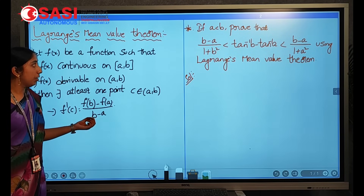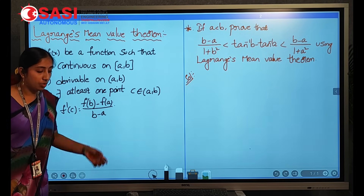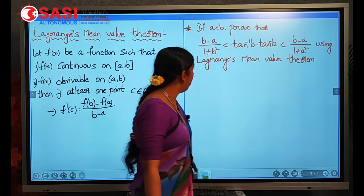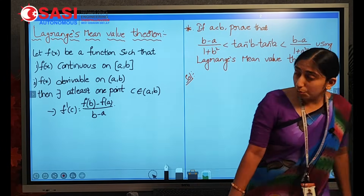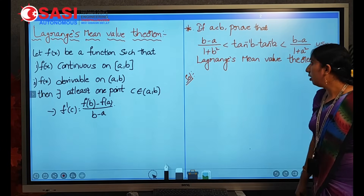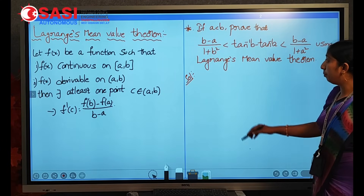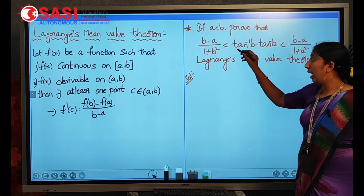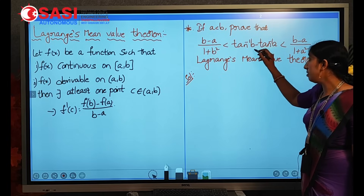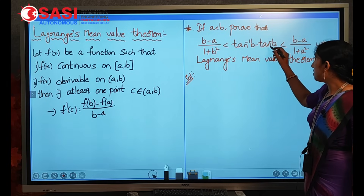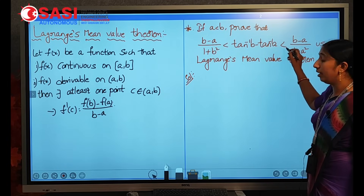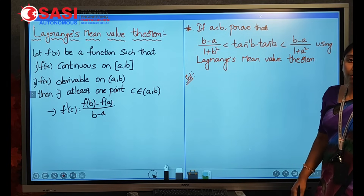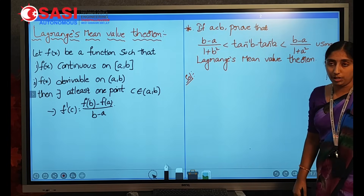By using this theorem, now we have to solve a problem. The problem is: prove that (b − a)/(1 + b²) < tan⁻¹b − tan⁻¹a < (b − a)/(1 + a²).